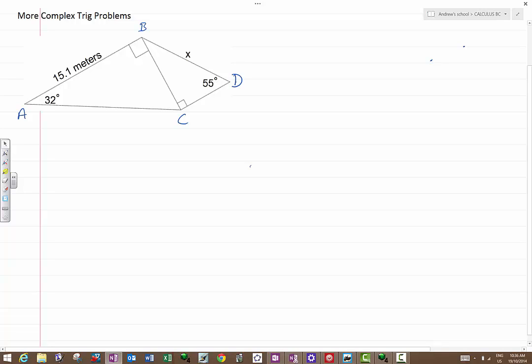We can see right away we cannot find x directly in the right-hand triangle because we know no lengths. However, we know that side BC is common to both triangles. And the left-hand triangle does have a length, so we should be able to figure things out.